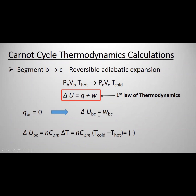For adiabatic expansion, the internal energy equals W. The internal energy is calculated as N C_VM delta T, which is N C_VM times (T_cold minus T_hot). Since T_hot is greater than T_cold, this results in a negative sign, so you end up with a negative value.